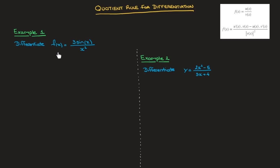We need to differentiate f of x, which equals 3 sine of x over x squared. For the sake of comparing it to our formula, I'll go ahead and call the function 3 sine of x, u of x, and the function on the denominator, x squared, v of x.